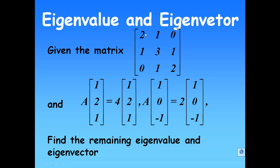We are given a matrix 2,1,0,1,3,1,0,1,2. We are also given that [1,2,1] is an eigenvector of A with eigenvalue 4, and [1,0,-1] is an eigenvector of A with the corresponding eigenvalue 2. We are going to find the remaining eigenvalue and eigenvector.